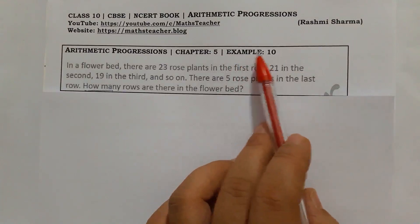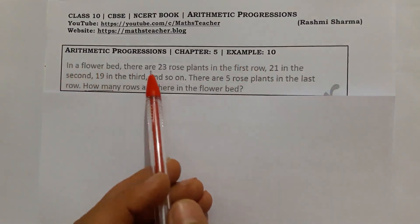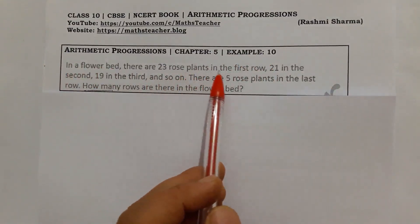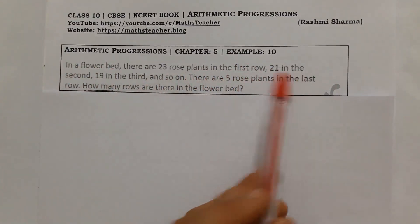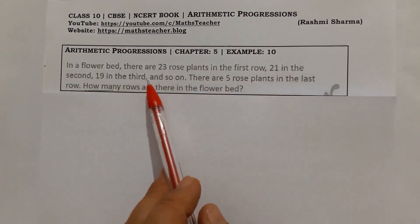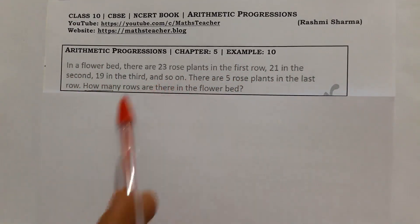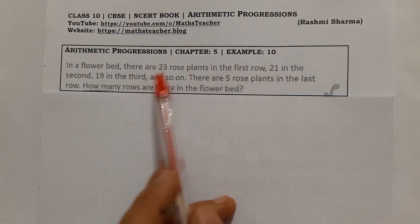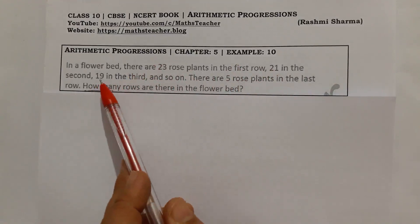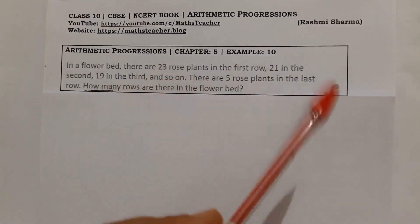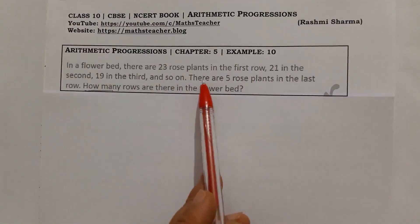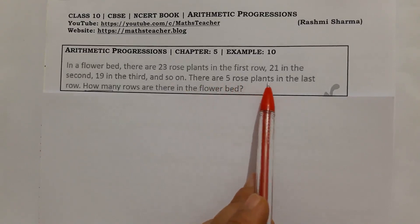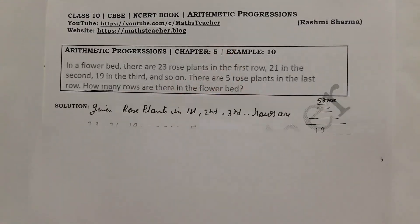Chapter 5, Example 10. In a flower bed, there are 23 rose plants in the first row, 21 in the second, 19 in the third, and so on. There are 5 rose plants in the last row.